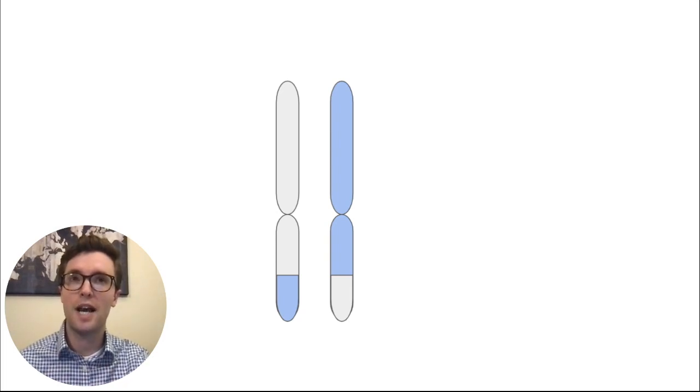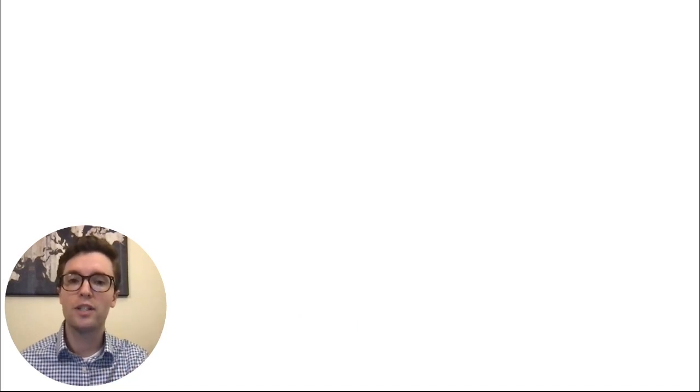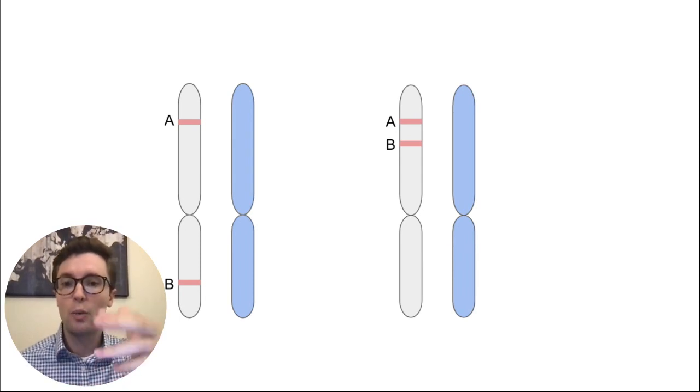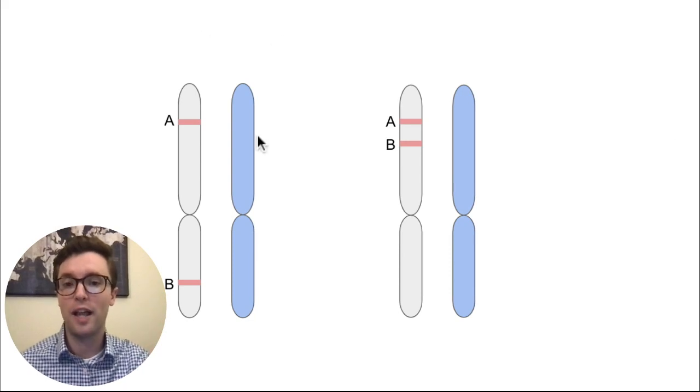This question is giving us these recombination frequencies and then asking us to put the genes in order. So if we were to switch that out and have two hypothetical chromosomal pairs here with various genes, we can see that genes A and B on this diagram over here on the left are very far apart. Genes A and B here on the right are much closer together.